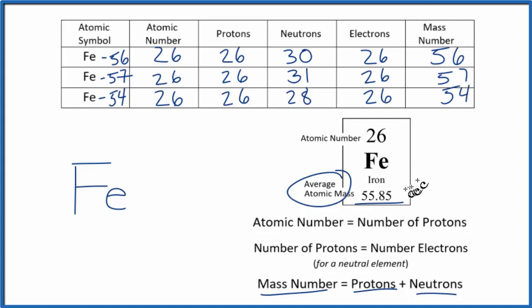But most of them are 56. So this number here is closer to 56. This is a weighted average. So since most of these are 56, have a mass number of 56 with the 30 neutrons, we'll have this average closer to 56 as well.